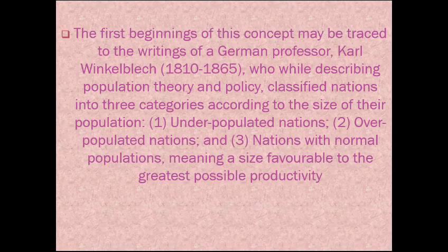The first beginnings of this concept may be traced to the writings of German professor Karl Winkerble. While describing the theory and policy, he classified the nations into three categories according to the size of the population: the underpopulated nation, the overpopulated nation, and nations with normal populations, meaning a size favorable to the greatest possible productivity.